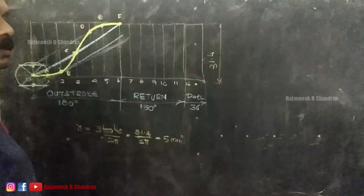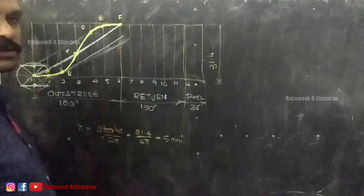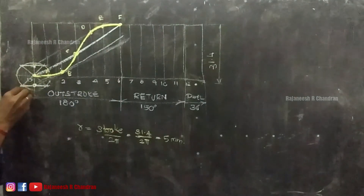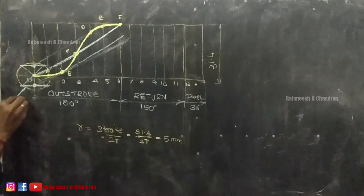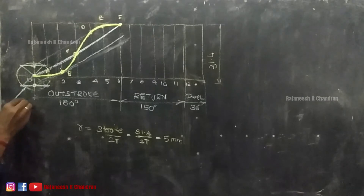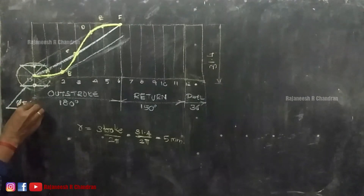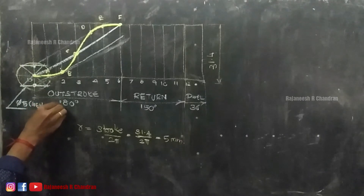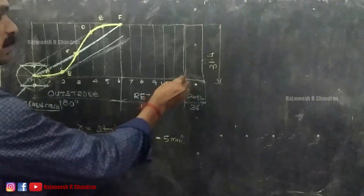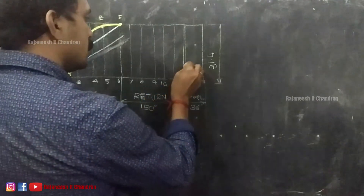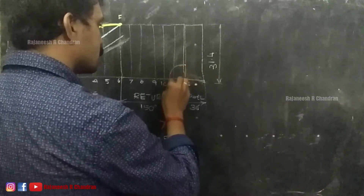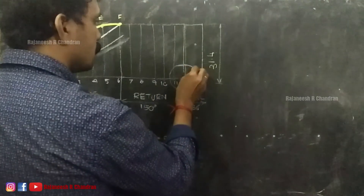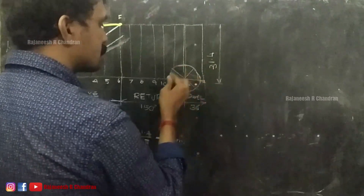For the return stroke portion, note that the diameter of the generating circle is 5 mm. Draw another generating circle here with the same 5 mm radius. Divide that circle also into six equal parts.